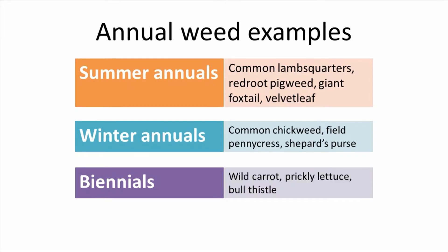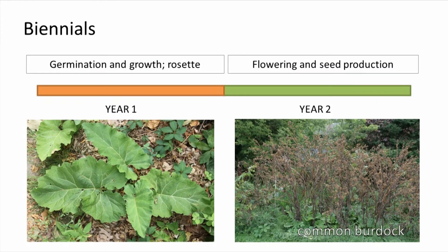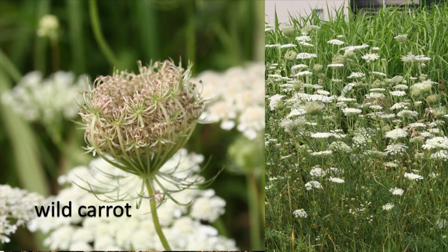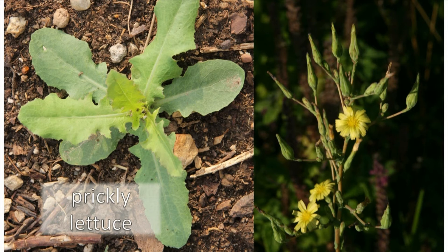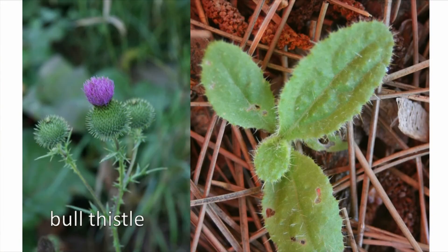The last subcategory of annual weeds includes biennials. Even though biennials take two years to go through their life cycle, they are lumped together with annuals. The first year, biennials germinate and grow into a rosette, which is a whorl or spiral of leaves, oftentimes close to the ground. You can see an example of the rosette formed by burdock in the left-hand picture. These plants overwinter, and the following year they produce a flower stalk and seeds, as shown in the picture on the right. Examples of biennial weeds include wild carrot, prickly lettuce, and bull thistle.